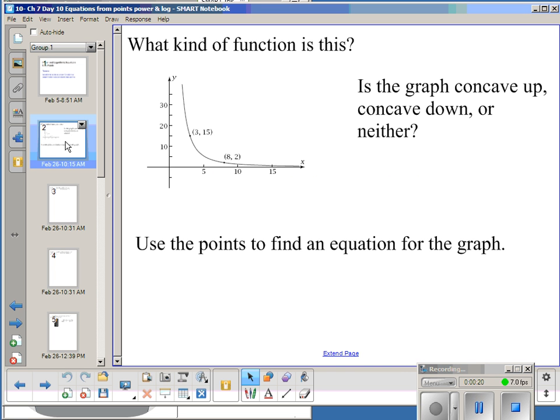All right, here's our first problem. We have this graph. What kind of function is this? And if you notice, we have a double set of asymptotes. There's a vertical asymptote and a horizontal asymptote, and that makes this an inverse power model.